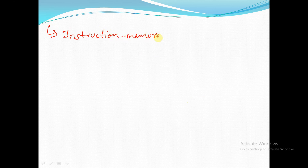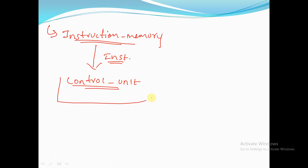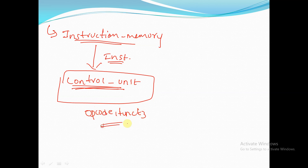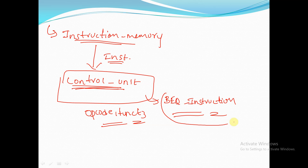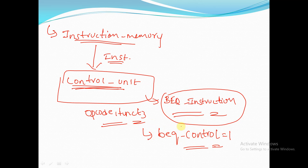Initially, the instruction is fetched from the instruction memory. This instruction is given to the control unit. The control unit decides what type of instruction it is — based on opcode, function3, and other values, it determines it is a branch equal to instruction. Since it is a BEQ instruction, it asserts the BEQ control signal to 1, and passes that signal to the DPU unit.